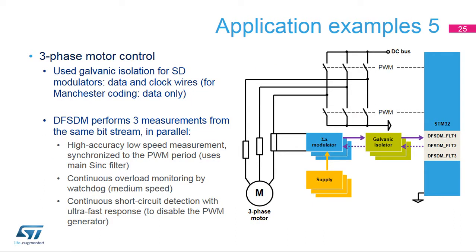This example is related to a three-phase industrial, high-voltage, high-current motor drive where floating shunts and galvanic isolation are standard. A single reading channel is represented here, while in the application two or three channels are used for current in addition to two or three channels for voltage. The currents are usually measured simultaneously by three DF-SDM channels, while the voltage can be measured sequentially with the same DF-SDM channel. The same bit stream is processed three times: first, for high-accuracy measurements, the main filter is used over a relatively long time, measured synchronously with a PWM period to avoid switching noise and have regular samples.